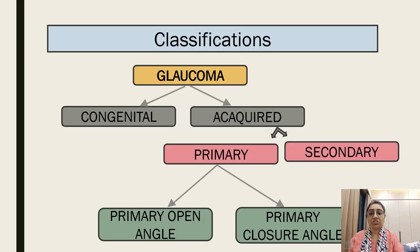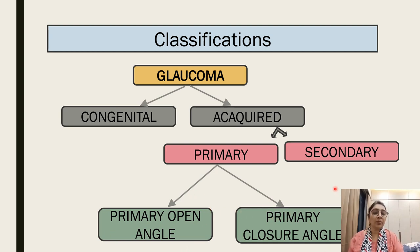Now, classification of glaucoma. Glaucoma is usually of two types: congenital (by birth) or acquired. Acquired glaucoma is either primary or secondary. Primary is further classified into primary open-angle glaucoma and primary closed-angle glaucoma. Secondary glaucoma is due to any secondary disease or injury.